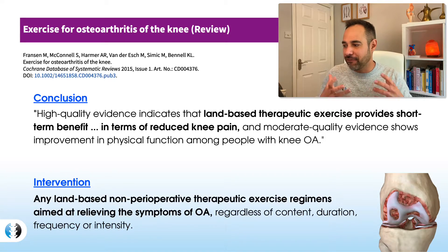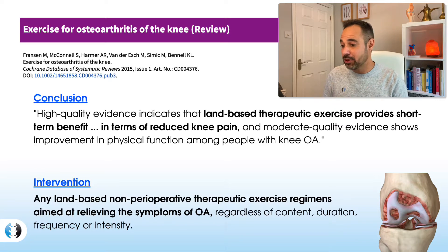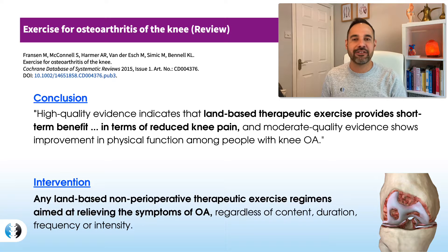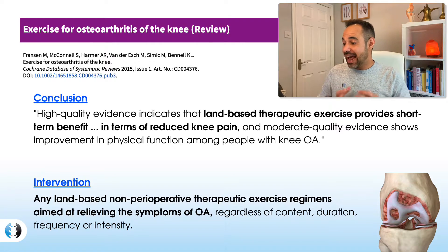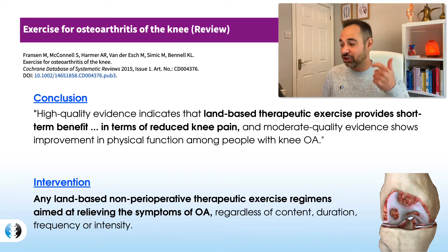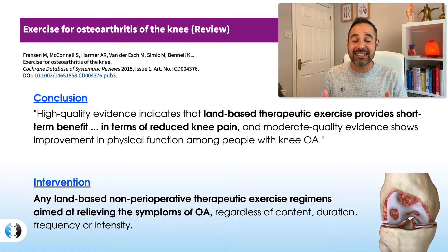The evidence comes from a Cochrane review by Franson et al., 2015 — one of the highest levels of evidence we have. High-quality evidence indicates that land-based therapeutic exercise provides short-term benefit in terms of reduced knee pain in OA, and also shows improvement in physical function. Their findings include any land-based non-perioperative therapeutic exercise regimens aimed at relieving OA symptoms, regardless of content, duration, frequency, and intensity — meaning essentially any land-based exercise can be really useful.